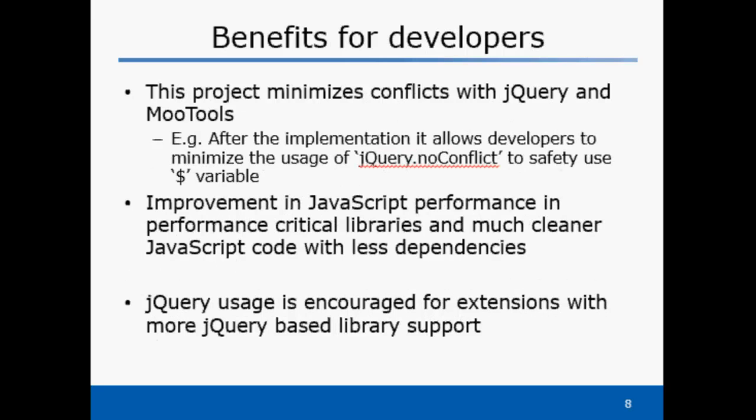With this project, although it's transparent to the end user, developers get benefits when writing JavaScript code. It minimizes the conflicts when using the $ variable, which is used in both MooTools and jQuery. Now most of the JavaScript code is uniform and has less dependence, which ultimately benefits the developers. And above all, now you have a reason to use jQuery as web developers.